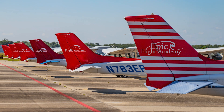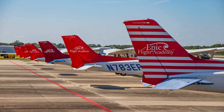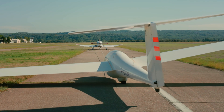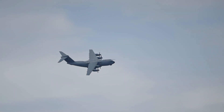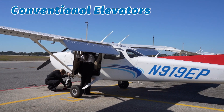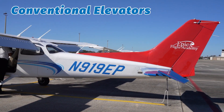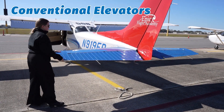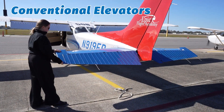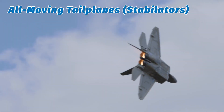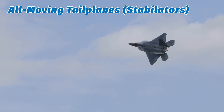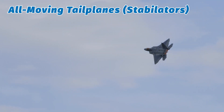Each aircraft is different, meaning there are different types of elevators, each designed to meet specific aircraft requirements and design plans. Conventional elevators, like those found on Epic's Cessna Skyhawks, are hinged movable surfaces attached to the trailing edge of the horizontal stabilizer. With all-moving tailplanes, the entire horizontal stabilizer moves; these are commonly found in high-speed jets and transonic and supersonic aircraft.